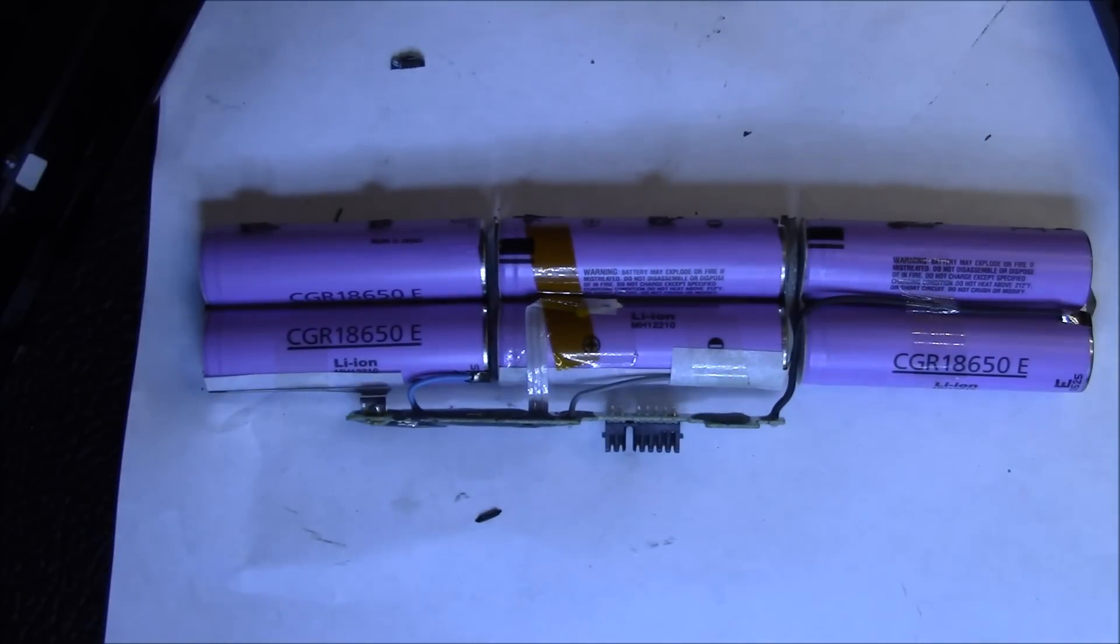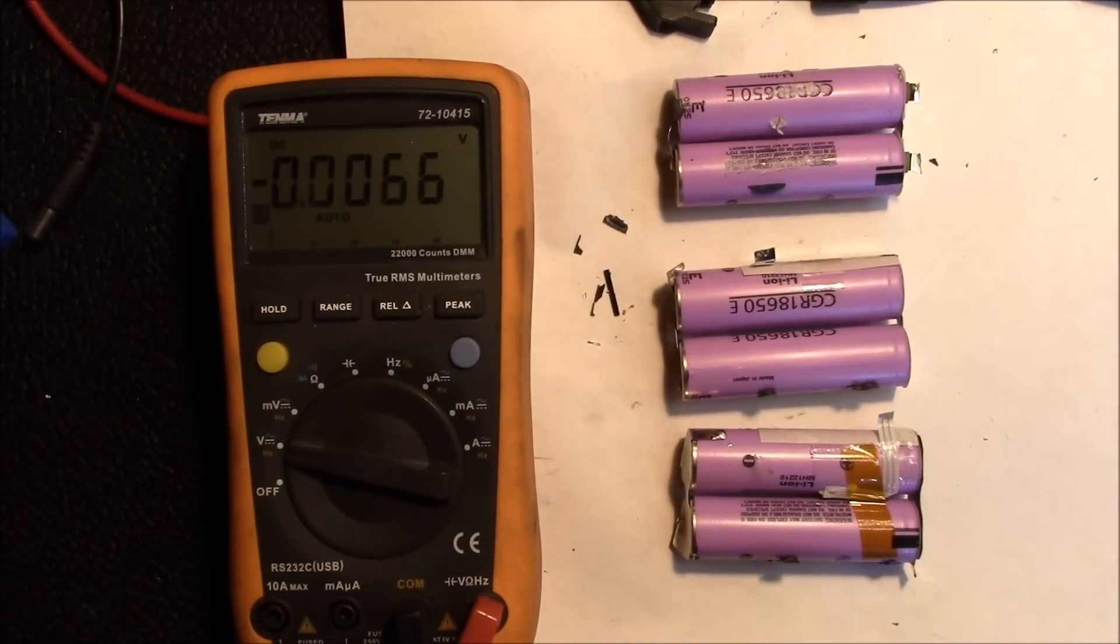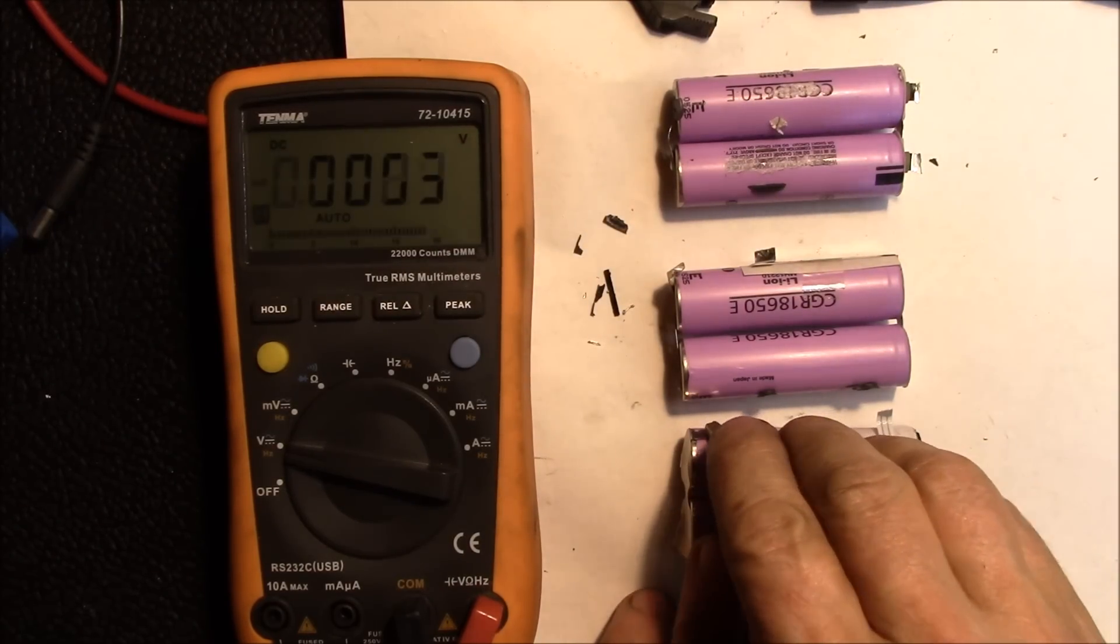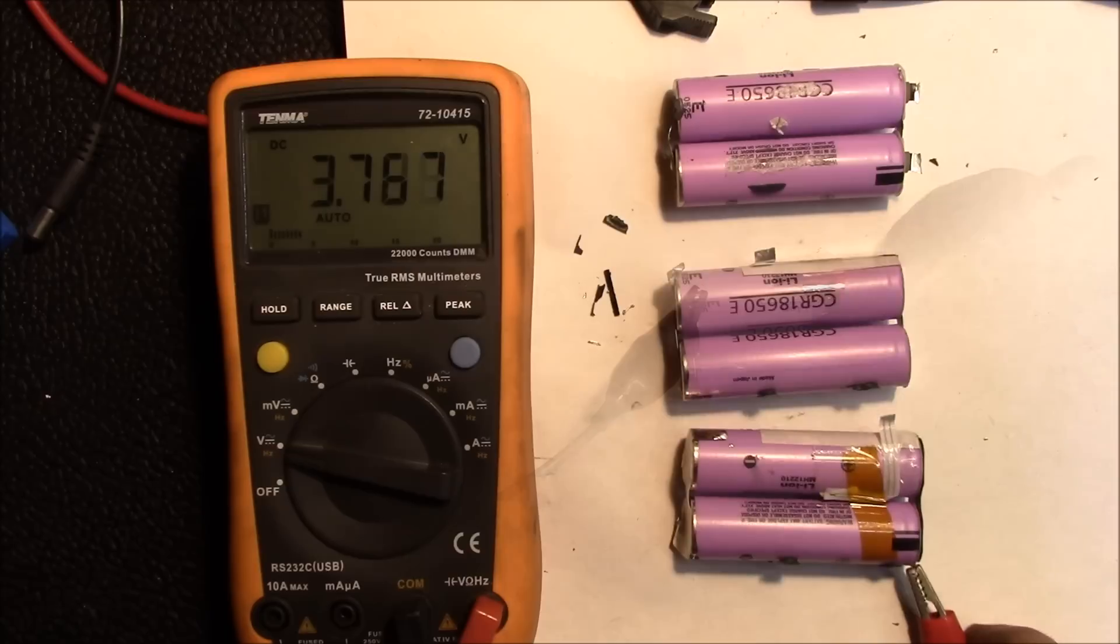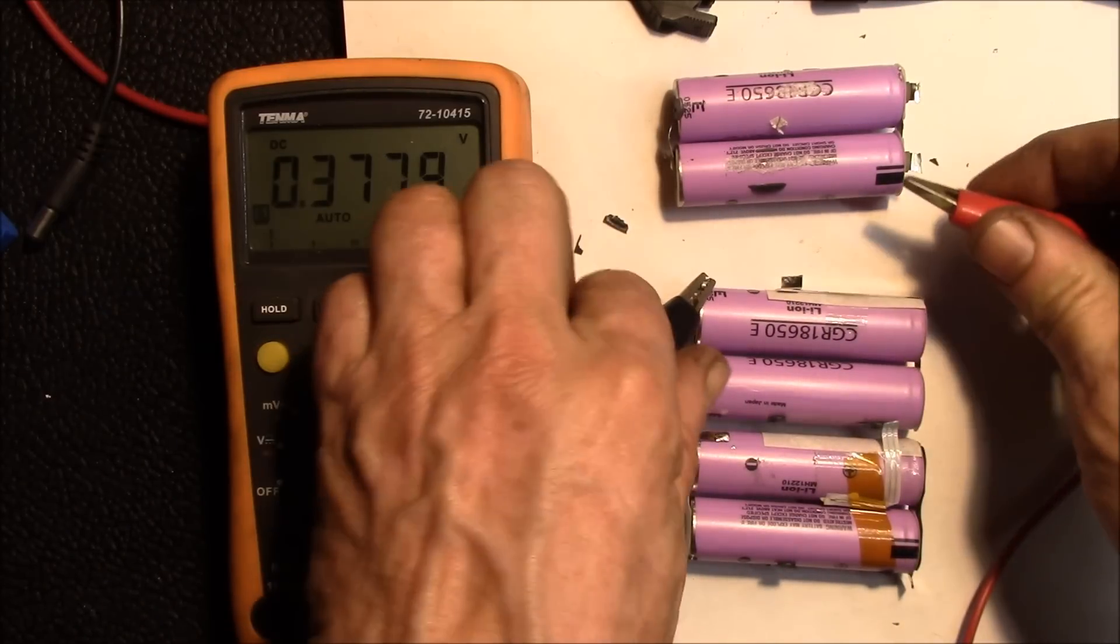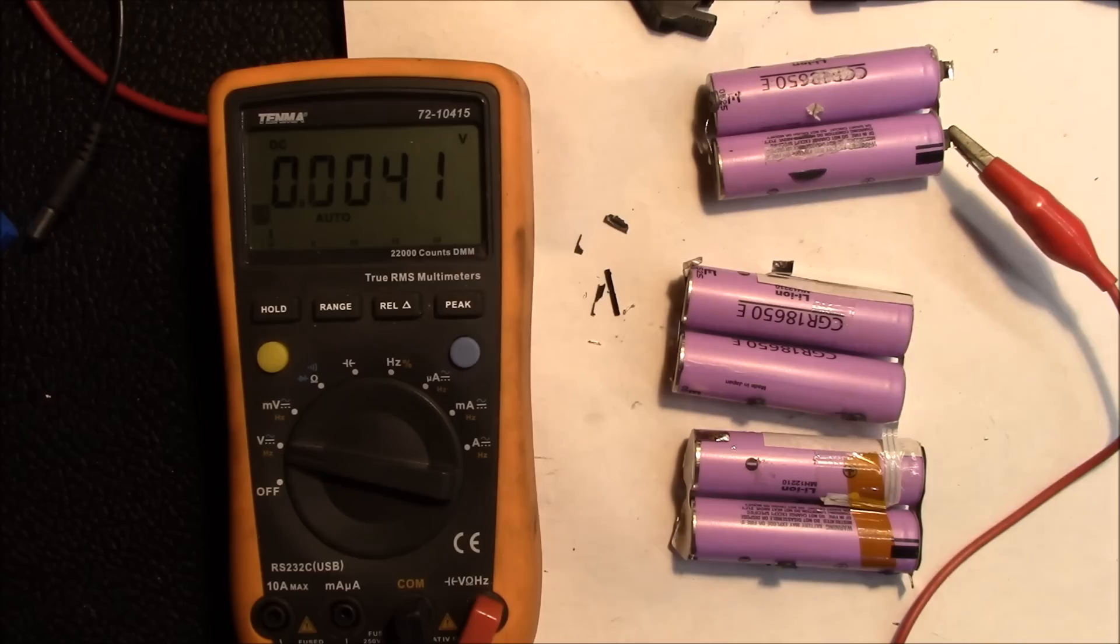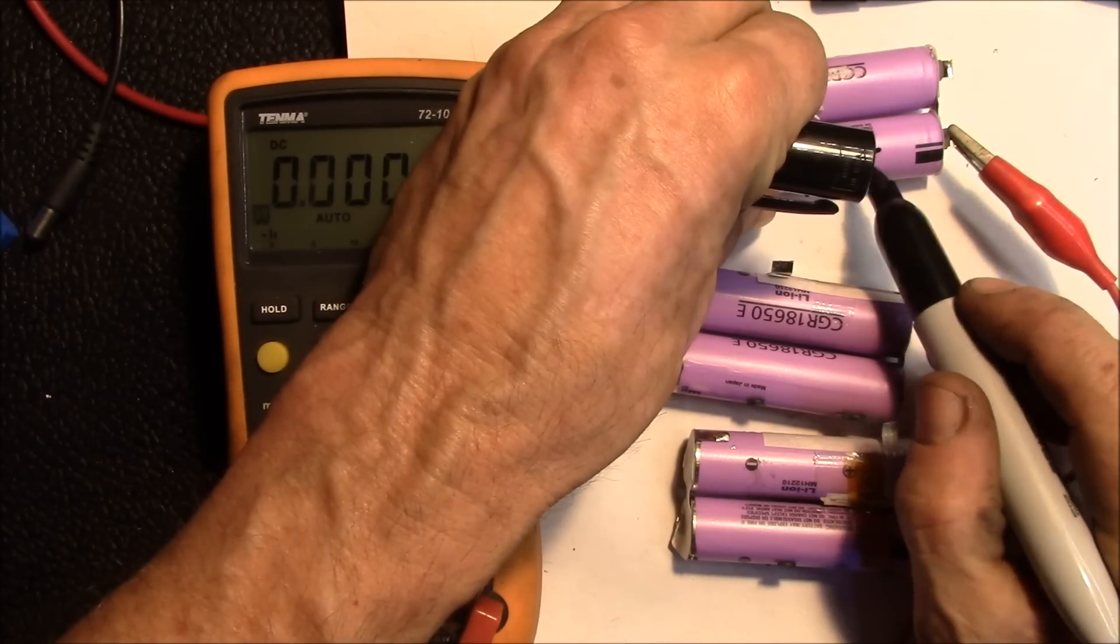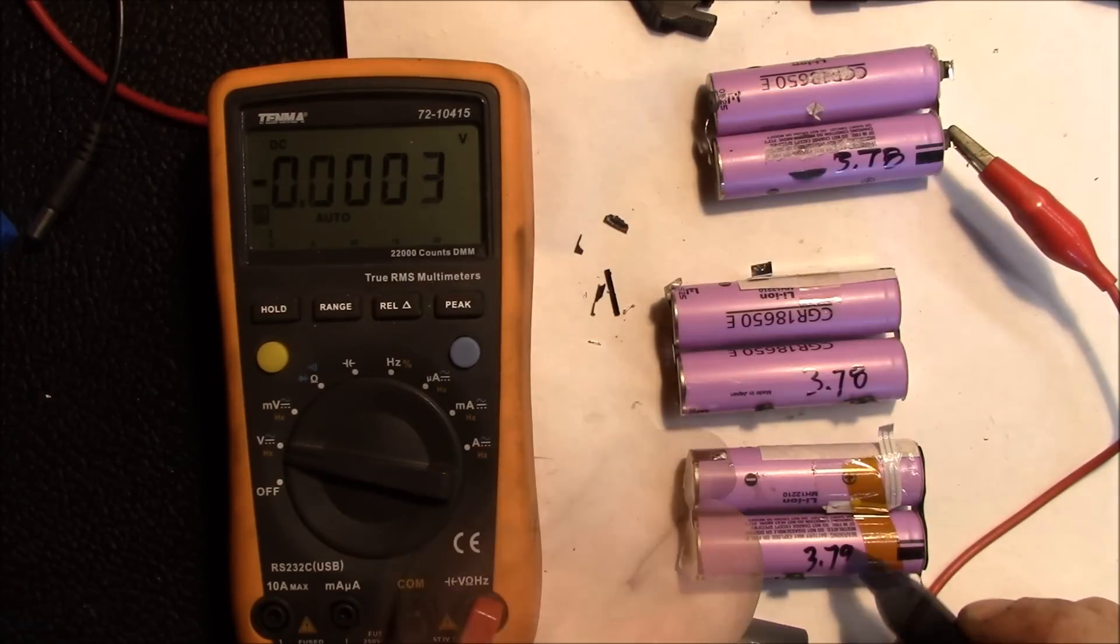I got the three pairs of cells separated, and now what I like to do is check the voltage before I do anything with them. These have all been testing pretty good. There we got 3.79, 3.78, and this one 3.78. So I'll write that down. This one was a little higher, so now that's ready to charge.